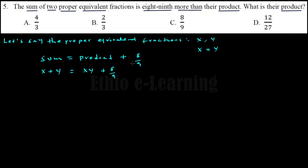So the sum of the fractions equals the product of the fractions. Since both proper equivalent fractions are equal to x, the product is x times y. Substituting y with x, the equation simplifies using x values only. So x and y values can be determined from this equation, and the product of the two fractions can be found.